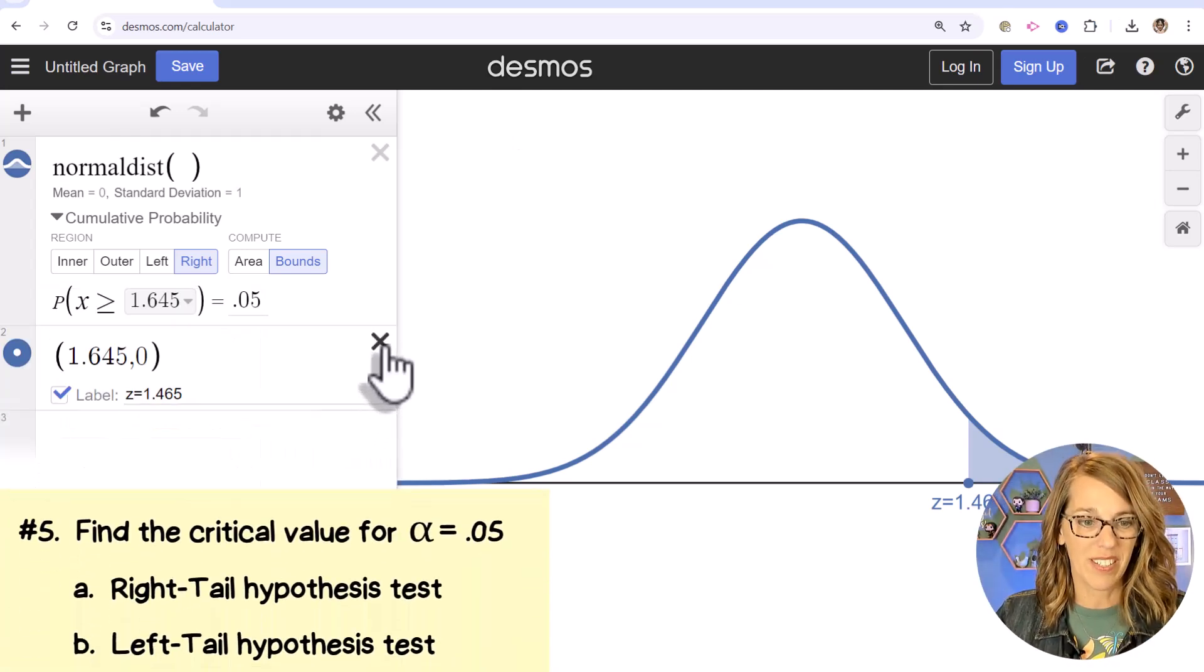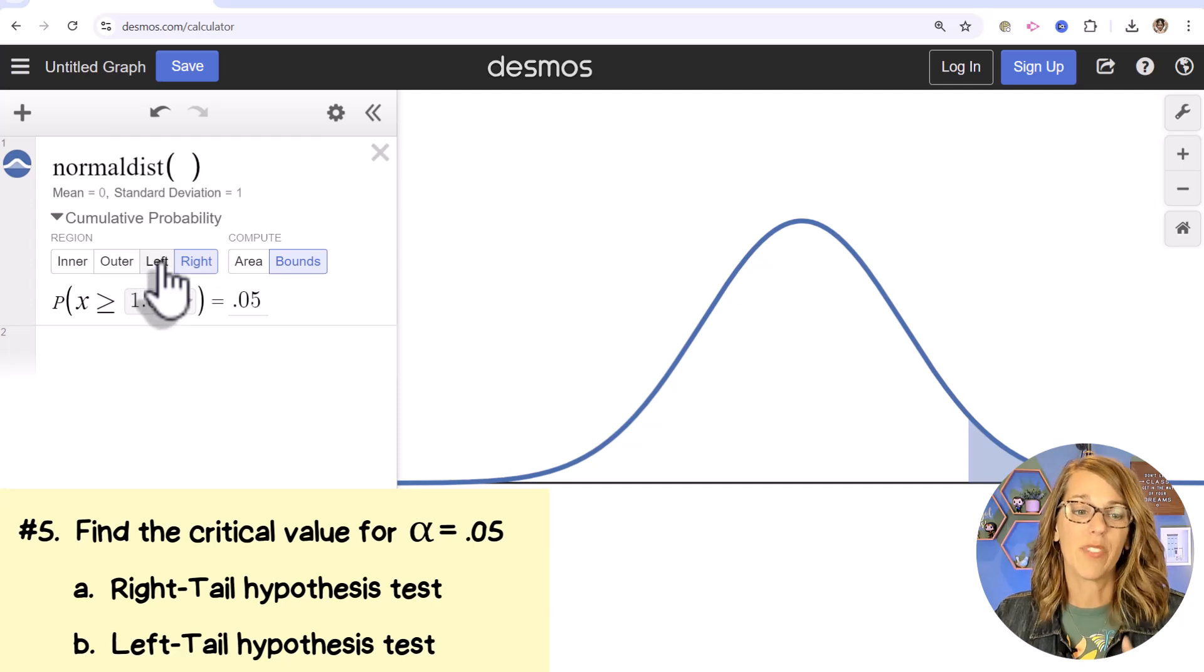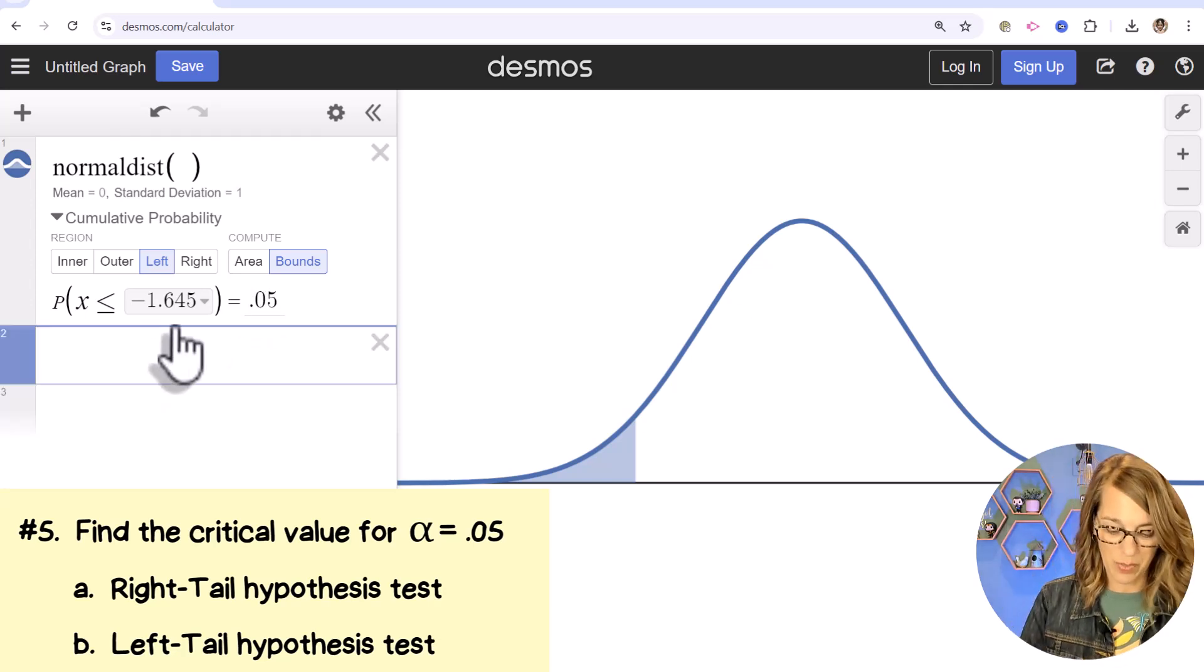Let's do the next one. I'm going to x out of both of these. This time I want a left tail. So I'm just going to click on left and now it says x is less than and I've got that 0.05.